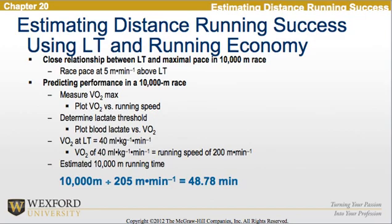When estimating distance running success using the lactate threshold and running economy, there is a close relationship between the lactate threshold and maximum pace in a 10-kilometer race, where the run pace is approximately 5 meters per minute above the lactate threshold. To predict performance in a 10-kilometer race, we measure VO2max and plot VO2 versus running speed, determine the lactate threshold and plot blood lactate versus VO2. The VO2 at the lactate threshold is equal to approximately 40 milliliters per kilogram per minute, which corresponds to a running speed of 200 meters per minute — the estimated 10-kilometer running time.